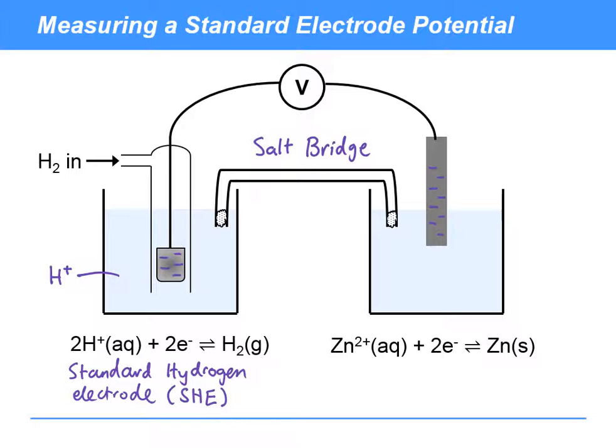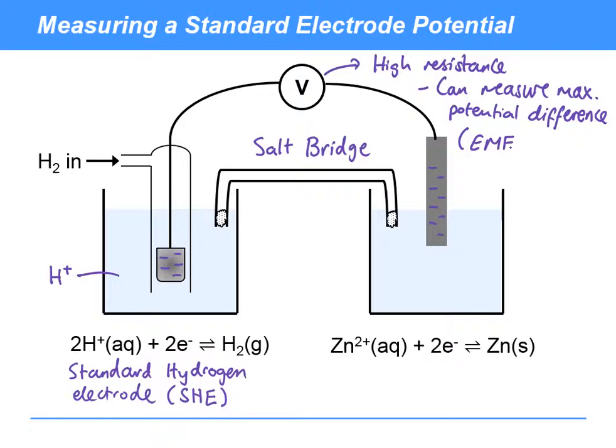Now the voltmeter's important. It has to have a very high resistance, because if this voltmeter has a lower resistance, then some of these electrons will start to move from the high concentration to the low, and that will distort the potential difference that you measure. If we're using a high resistance voltmeter, we can measure the maximum potential difference, and this is known as the electromotive force, which is known as the EMF, and it's given the symbol E.